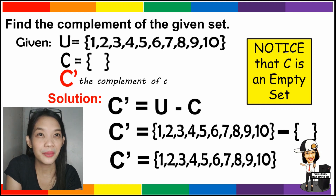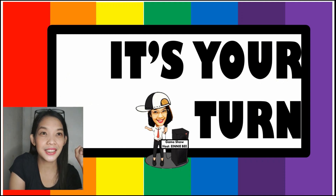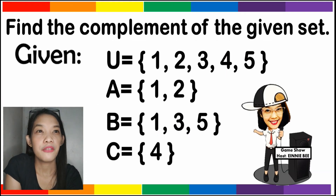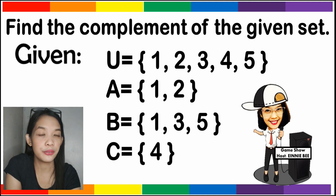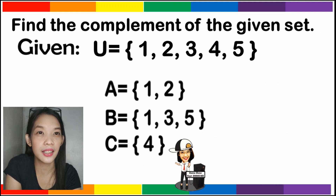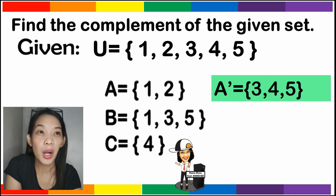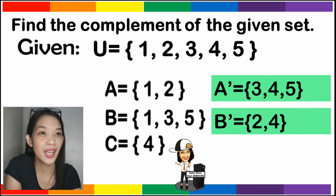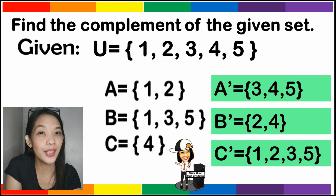You can pause the video and answer this. Find the complement of the given set. From the given set, we have the universal set 1, 2, 3, 4, and 5. Our set A has the elements 1 and 2. Set B has the elements 1, 3, and 5. And set C has the element 4. Let's check your answers. The complement of A will be 3, 4, and 5. The complement of B will be 2 and 4. And the complement of C will be 1, 2, 3, and 5.